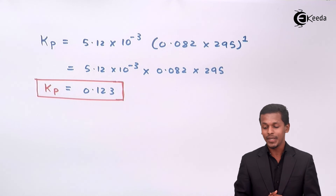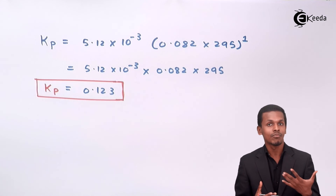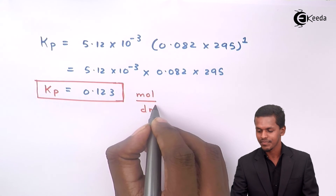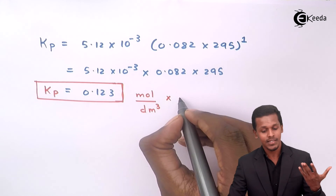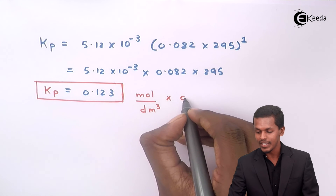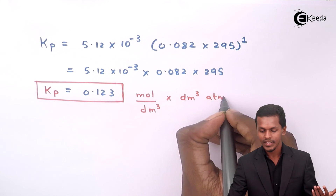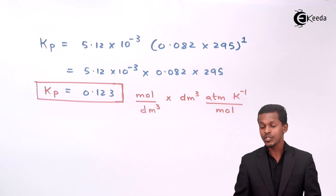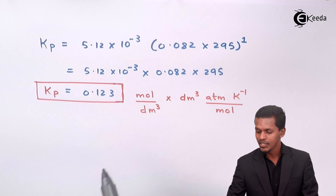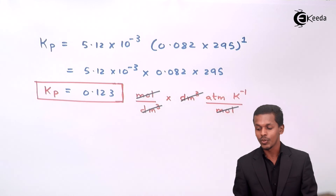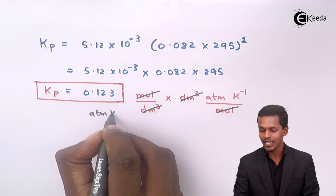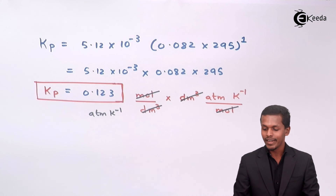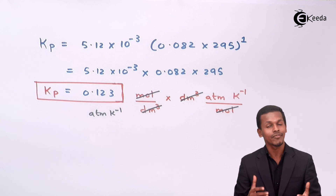Talking about the unit of Kp: Kc was in molar, which is moles per dm³. R has units of liter atmosphere per Kelvin per mole, and liter is the same as dm³. After cancellation, the dm³ and moles cancel out, leaving the unit of Kp as atmosphere. Here we have estimated the values of Kc and Kp using the formula derived in our previous lecture.